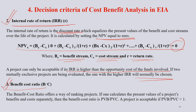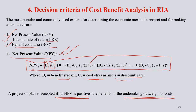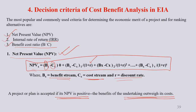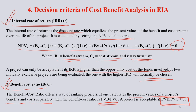Benefit cost ratio offers a way of ranking projects. If one calculates the present values of a project's benefits and costs separately, the benefit cost ratio is PVB divided by PVC. A project is acceptable when PVB/PVC is greater than 1. To summarize: if NPV is positive, the project goes ahead; if IRR is higher than the cost involved, the project is approved; otherwise it is rejected.